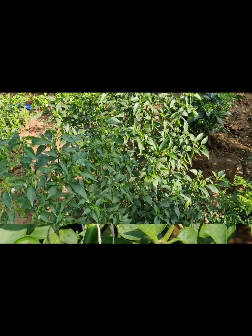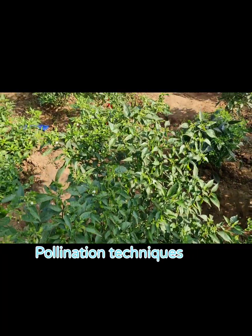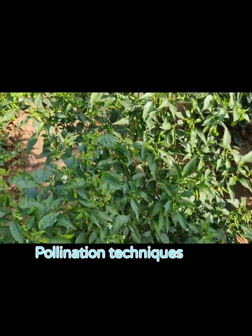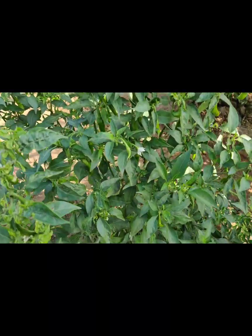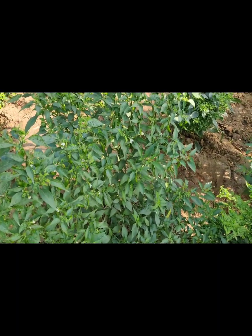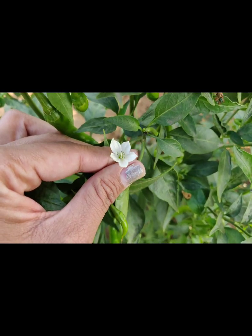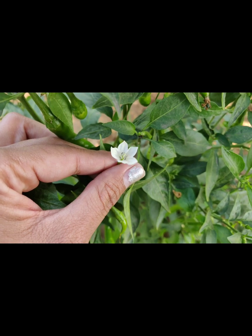Anthesis in chilli occurs between 6 to 9 am in the morning. The male parent selected here is Pusa Jwala. Select this type of male flower, which is fertile in nature.